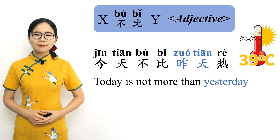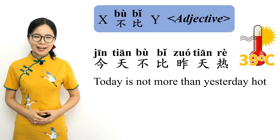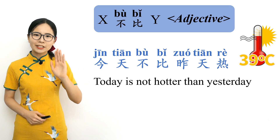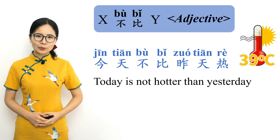今天不比昨天热. 昨天 means 'yesterday' and 热 is an adjective meaning 'hot.' Literally, 'today is not more than yesterday hot' — in other words, today is not hotter than yesterday. Please repeat after me. 今天不比昨天热. Today is not hotter than yesterday.